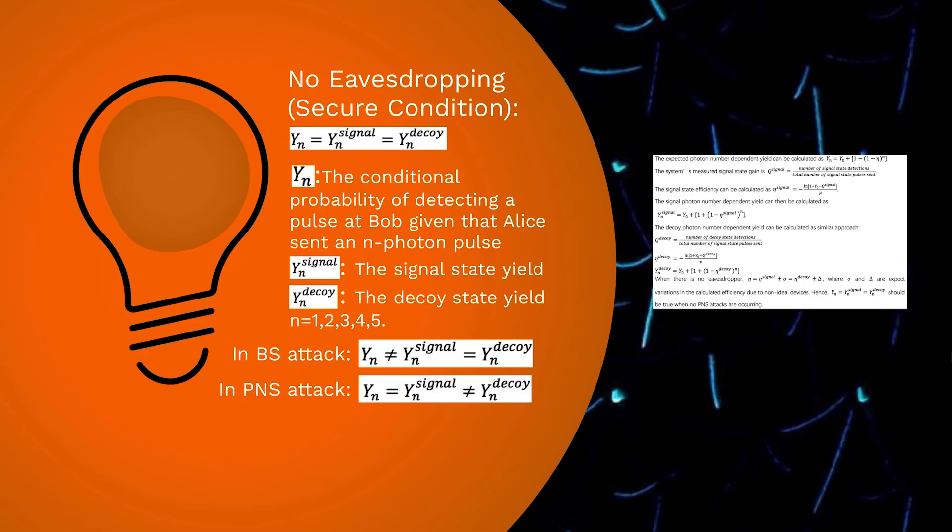However, Eve unavoidably blocks a larger number of decoy state pulses. This causes the decoy state photon number dependent yields to be significantly reduced and therefore statistically different than the expected and the signal state yields.